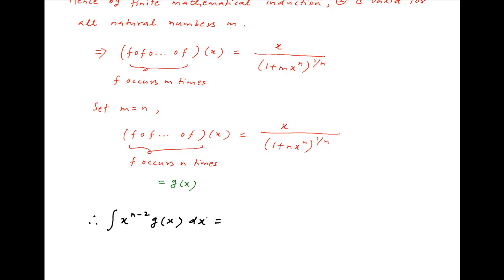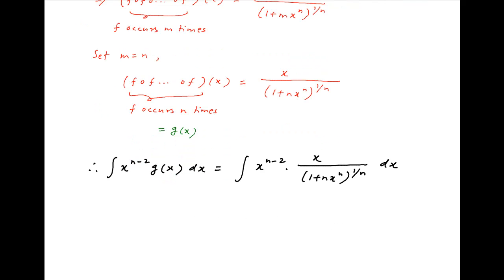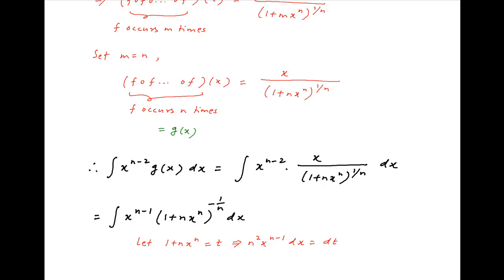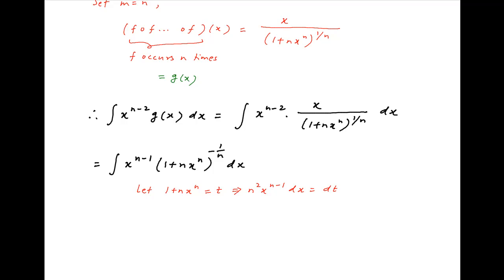Therefore, the integral of x raised to the power n minus 2 times g(x) dx is equal to the integral of x raised to the power n minus 2 times x upon 1 plus n times x raised to the power n, whole raised to the power 1 upon n, dx. Now let 1 plus n times x raised to the power n be equal to t. Taking the derivative of both sides, n squared times x raised to the power n minus 1 dx is equal to dt.